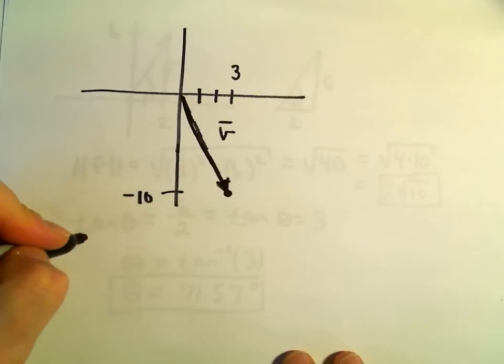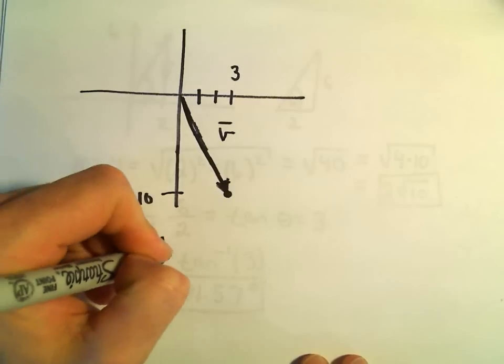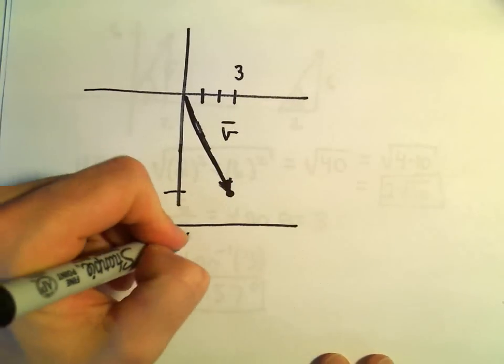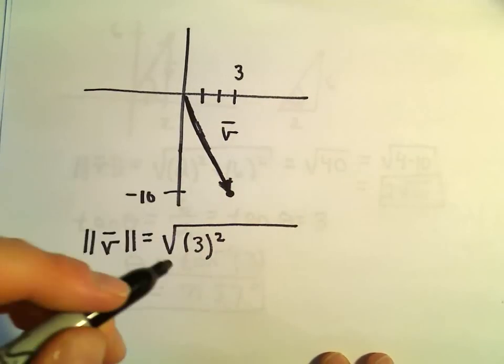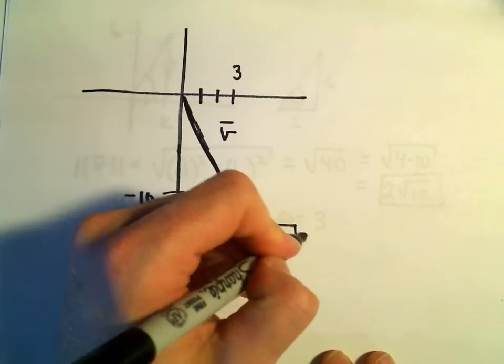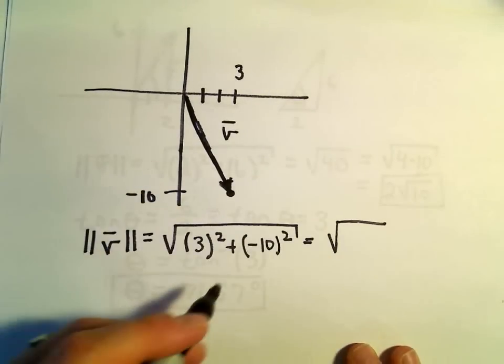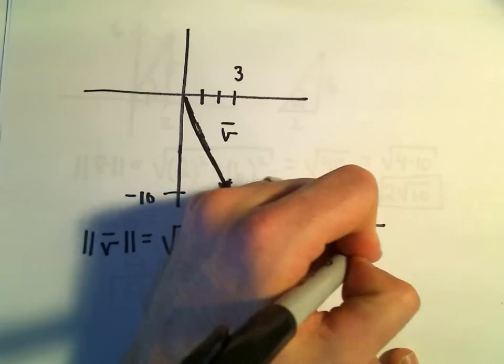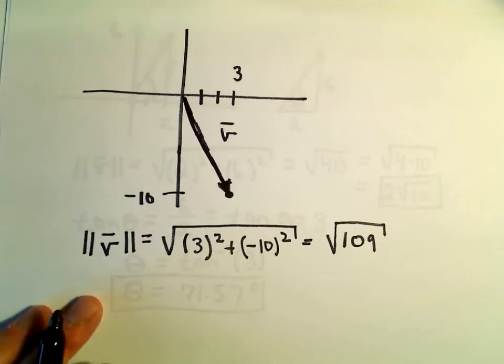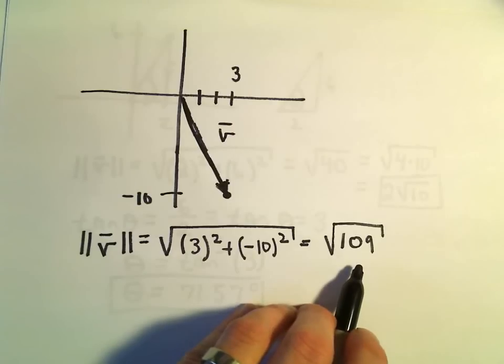So again, to find the magnitude, to find the magnitude of our vector, we'll just take each component. So 3 squared. We'll take each component, square it, add them together, square root it. So we'll get 9 plus 100. So 9 plus 100, which is going to be the square root of 109. I do believe 109 is prime. Is that correct?